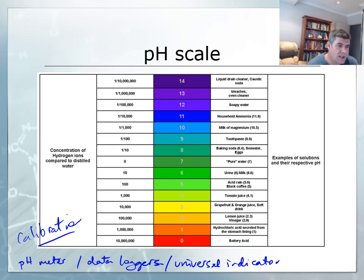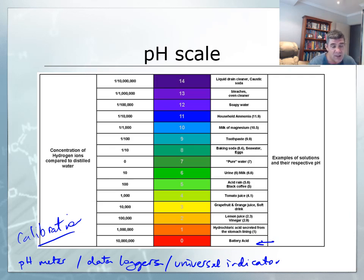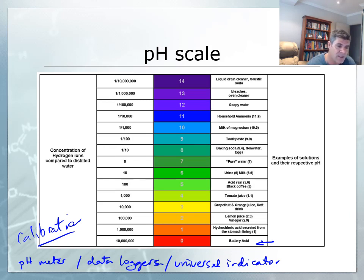This is just a quick scale to give you an idea of what we talked about before. Battery acid, for example, is an extraordinarily strong acid with a pH of 0. pH commonly goes from 0 to 14, but we can have values that extend beyond that — both into the negative range below 0 as well as above 14. But this is pretty much the scale that we tend to look at and think about.